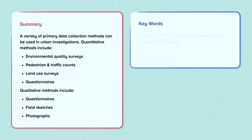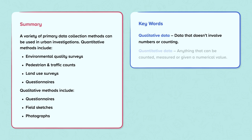Keywords: Qualitative data – data that doesn't involve numbers or counting. Quantitative data – anything that can be counted, measured, or given a numerical value.